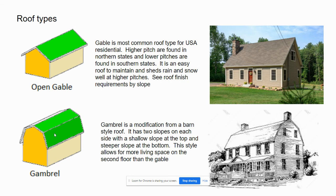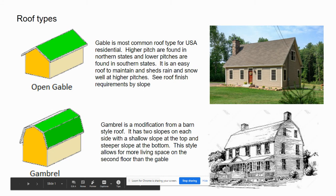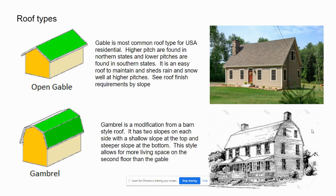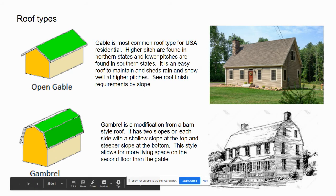The gambrel has two slopes on each side of the center ridge — a really steep slope at the bottom and a much shallower slope at the top. The edge creating that transition is called a purlin. This is a sketch of a traditional gambrel roof, modified from a barn style. The advantage of a gambrel over a gable roof is the second floor living area — the knee walls get pushed out much closer to the exterior walls, whereas on a cape those knee walls are quite a bit further in.